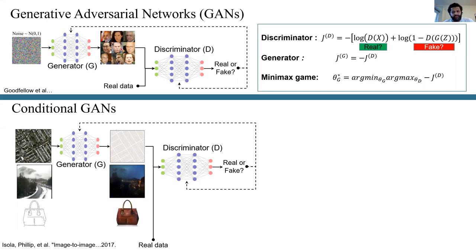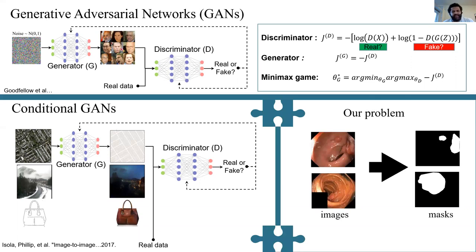For example, producing maps from aerial images or photos from edge sketches. Now this sounds to be the exact problem we are challenging to solve. We just want to map polyp images to masks, and it seems to be legit for us to see the polyp segmentation problem as an image-to-image translation task.